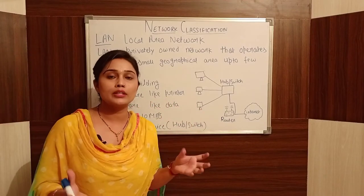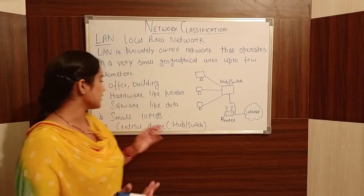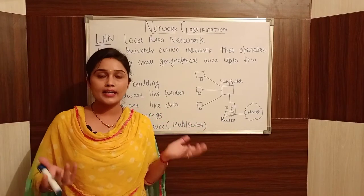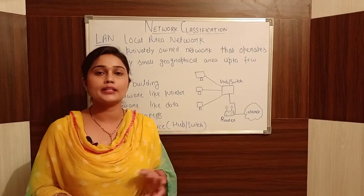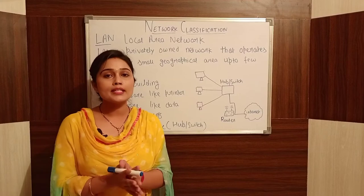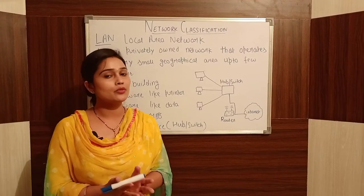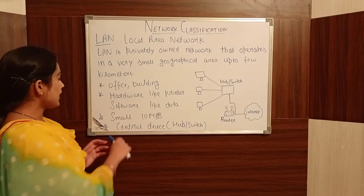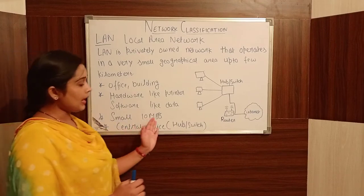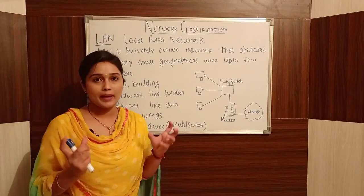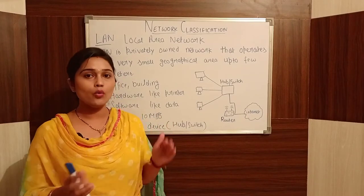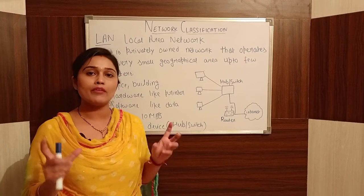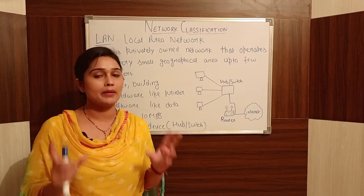Next is software sharing. Software means data, information, and applications — that is called software. Next is speed: 10 Mbps. The capacity of 10 Mbps means that the network can support up to 10 megabits per second within the LAN.